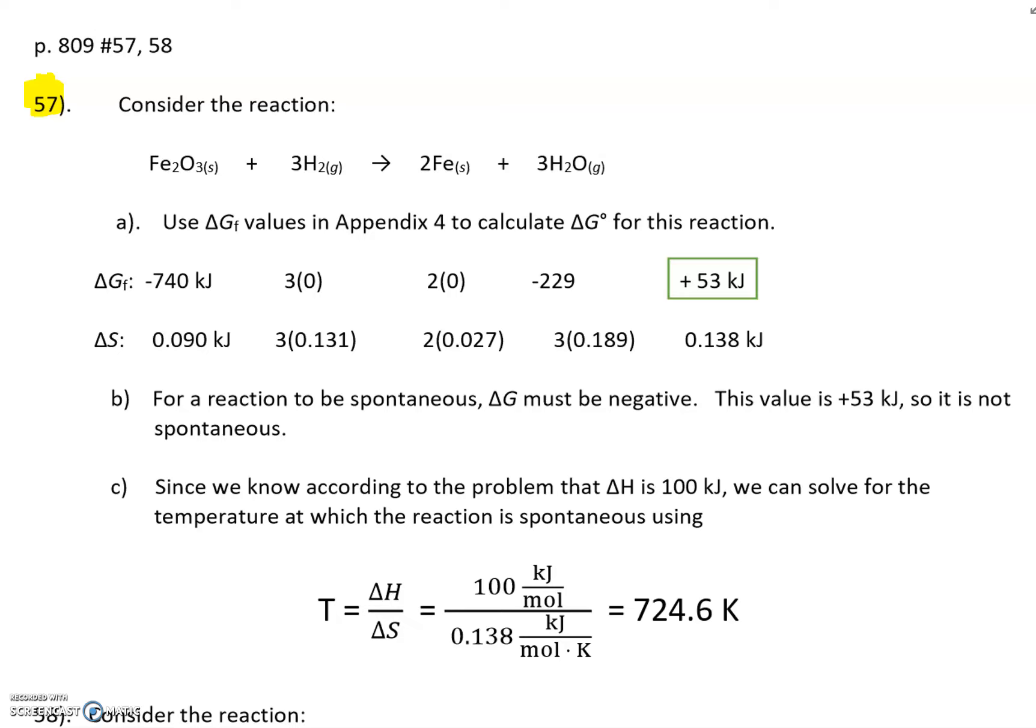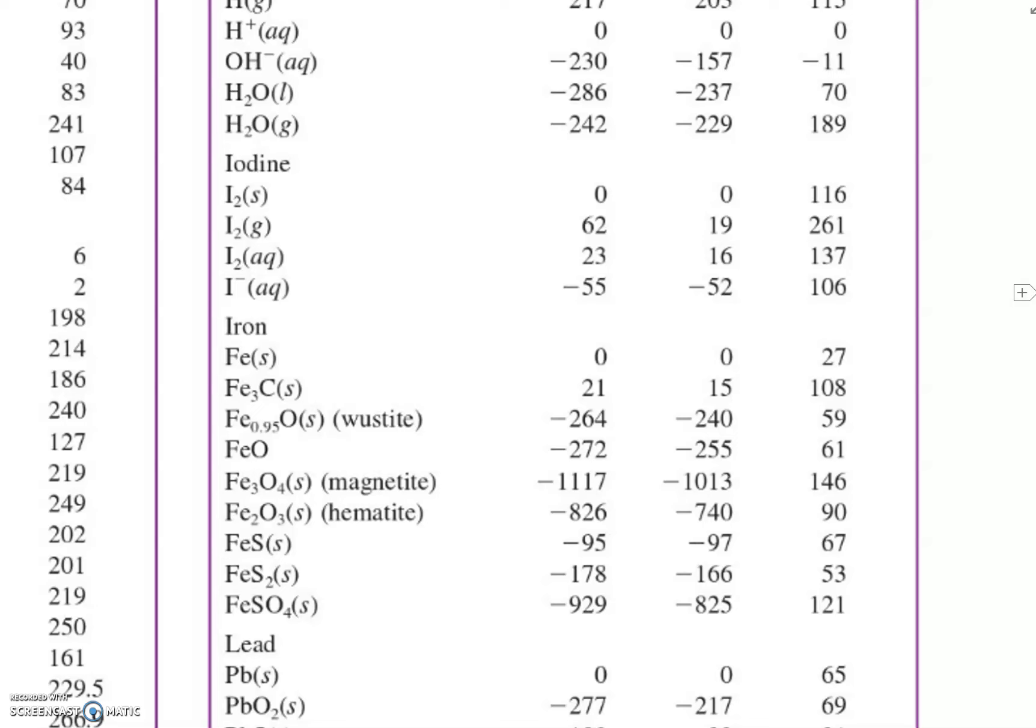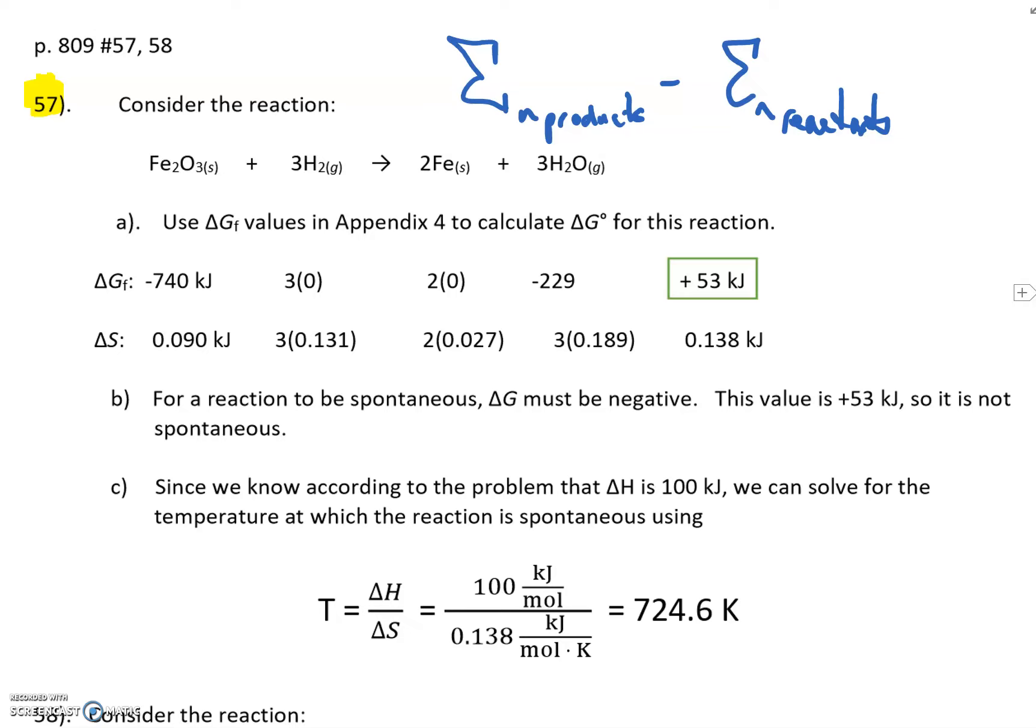It says consider this reaction you all can read. It says to use the values in Appendix 4 to calculate the delta G for the reaction. So all I did on this guy is I used this equation. Hang on, let me set this down flat so I can actually write on this. Where we know that the sum of the total of the delta G's of all the products, and if we subtract from that the sum of all the reactants.